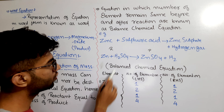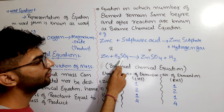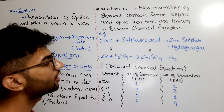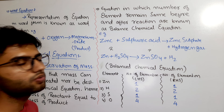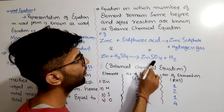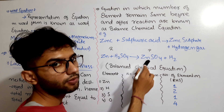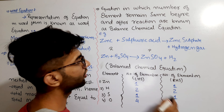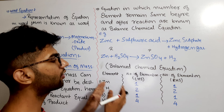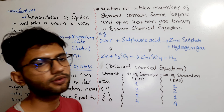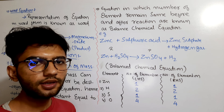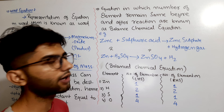Counting atoms on the reactant side: zinc = 1, hydrogen = 2, sulfur = 1, oxygen = 4. Now on the product side: zinc = 1, sulfur = 1, oxygen = 4, hydrogen = 2. The number of atoms of each element on the left hand side equals those on the right hand side, so this equation is a balanced chemical equation.